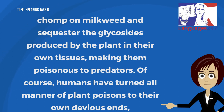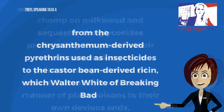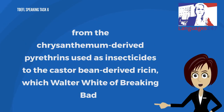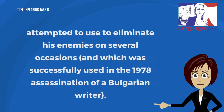Of course, humans have turned all manner of plant poisons to their own devious ends — from the chrysanthemum-derived pyrethrins used as insecticides, to the castor bean-derived ricin, which Walter White of Breaking Bad attempted to use to eliminate his enemies on several occasions, and which was successfully used in the 1978 assassination of a Bulgarian writer.